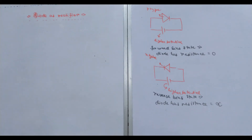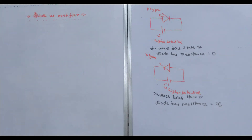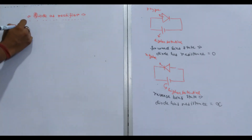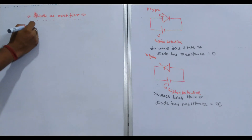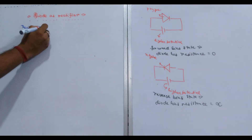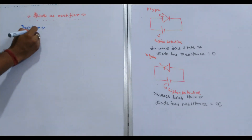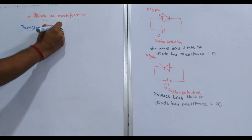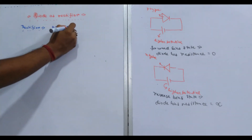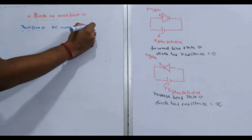These are the basic criteria that we need to use. The thing is, we need to do AC current and DC current. A rectifier is basically the rectification of AC current, which is the alternate current, converted to DC current.